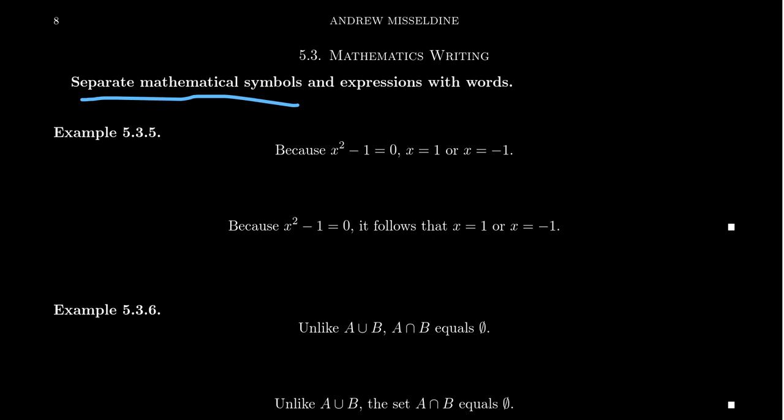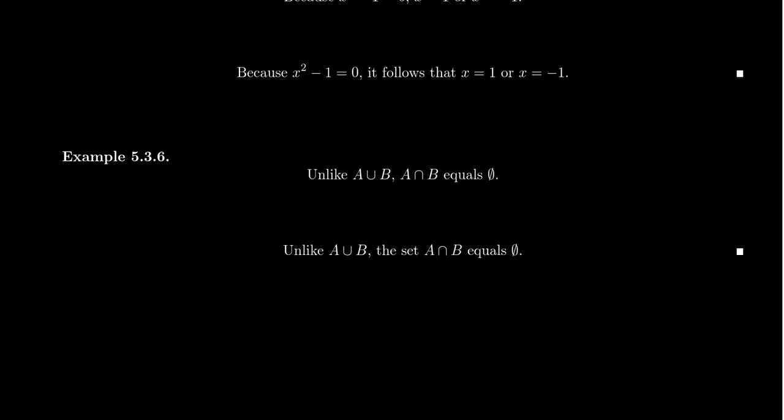When you look at the sentence 'because x² - 1 = 0, x = 1 or x = -1,' we really should add some words there to spread it out and make it easier to digest for the reader. Instead, we could say something like 'because x² - 1 = 0, it follows that x = 1 or x = -1.' Just that extra little bit of words helps with the clarity so much. You can say something like 'it follows that' or 'we have' or 'it is seen.' There's a lot of things you could say—put your own style, but put something to separate the math and make it more digestible for the reader.